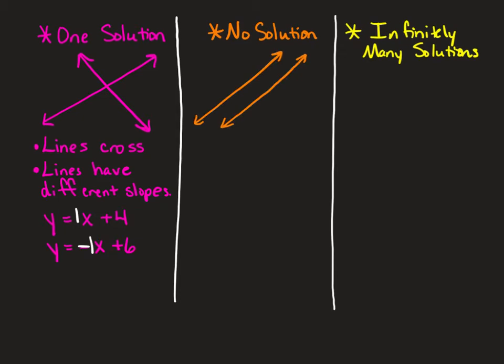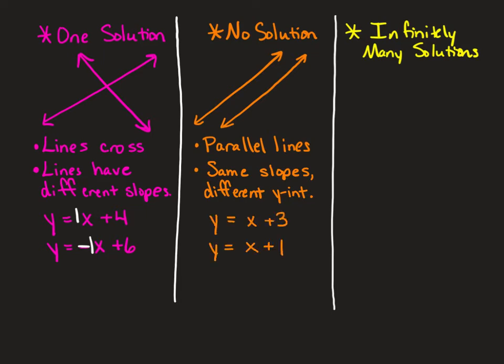A system with no solution has two lines that never cross. The only lines that never cross are parallel lines. Parallel lines have the same slopes — the same rise over run — but they're different lines, so they have different y-intercepts. Notice these equations have the same slope of 1 for both, but the y-intercepts are positive 3 and positive 1, which are different. So the lines slant the same direction but are in different positions and will never cross.